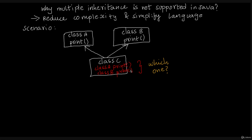This is the ambiguity problem. Because of this ambiguity and complexity, Java does not support multiple inheritance. This is an important interview question point.